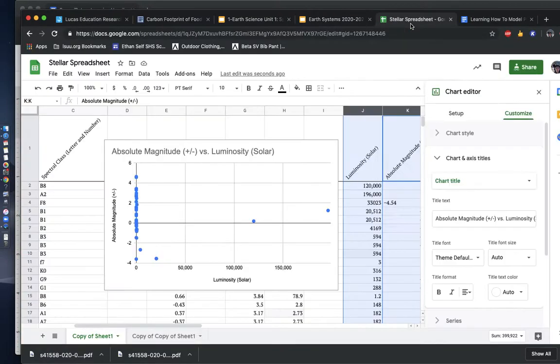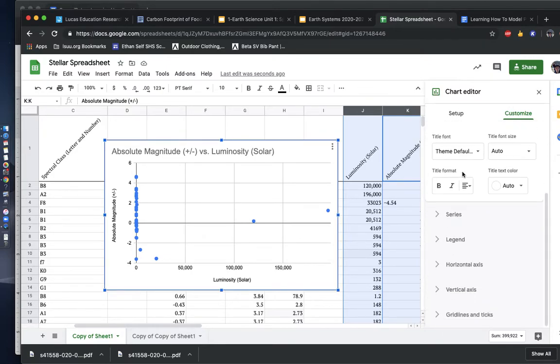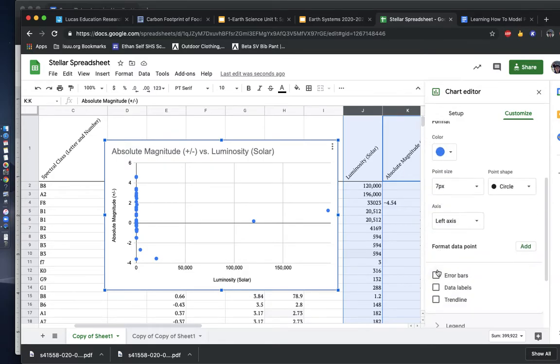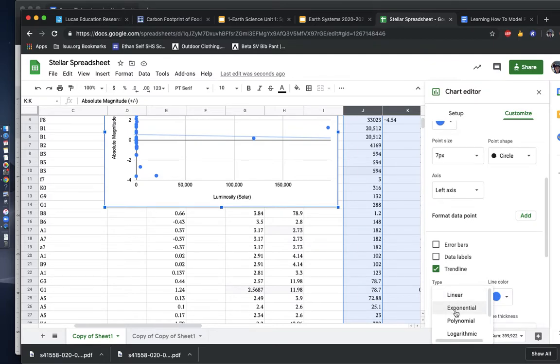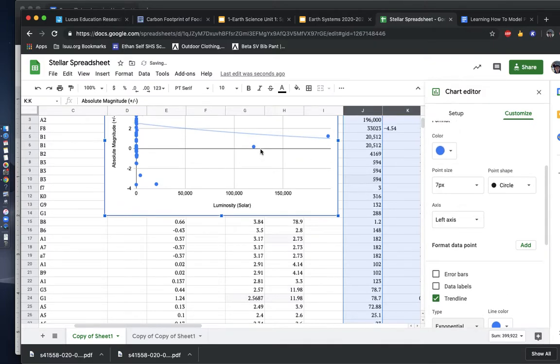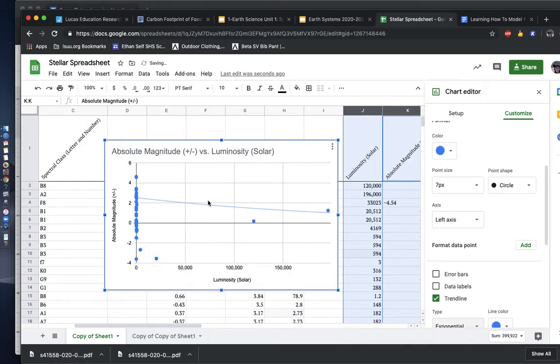Now to make a line of best fit, you're going to double click on your graph. You're going to go over to customize. You're going to scroll down to series. You should see a trend line here. Now something that you will note is that you can change different types of trend lines. You can make exponential, polynomial, logarithmic, power series, moving average. For now, I would say you probably want to stick with linear or exponential. Exponential only means that there might be more than one factor causing absolute magnitude to change alongside luminosity.